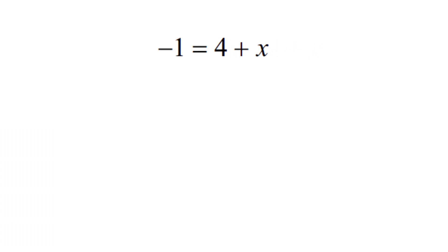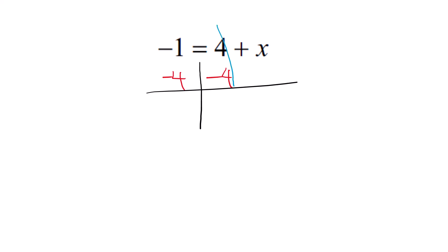This is also a one-step equation because we're going to solve it using only one step. It's not necessary that you know that ahead of time, but it's nice to know you're not going to have to do a ton of work. The x here is being added to a 4 — 4 plus x. This is addition, and that 4 is a positive 4. So to start moving that, I need to subtract it from both sides. I'm drawing a line down the middle where the equal sign is so you can see what I mean by both sides. Subtract 4 from this side and subtract 4 from that side. A positive 4 minus 4 is going to cancel out. The negative 1 minus 4 makes a negative 5, and then we have x as the only thing left on the other side. x equals negative 5.